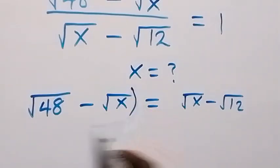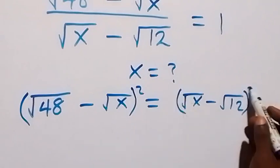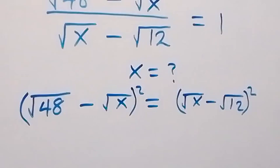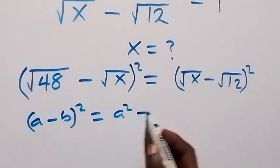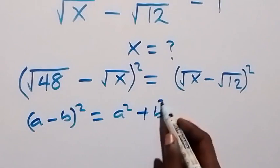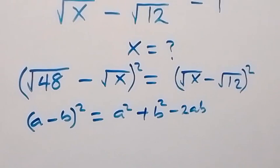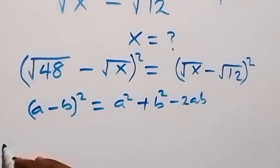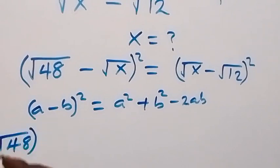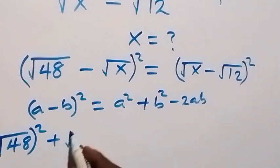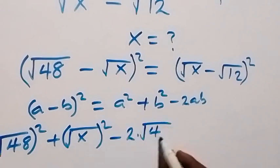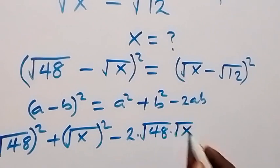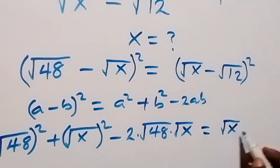Now from here we can square both sides. When we square this side and also square this side, following the format (a - b)² = a² + b² - 2ab, this will become root 48 squared plus root x squared minus 2 times root 48 times root x.